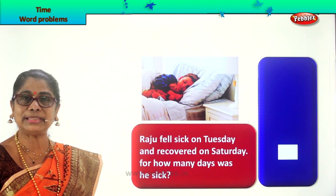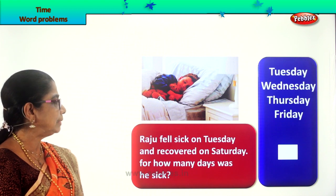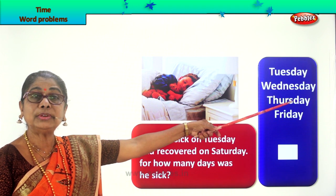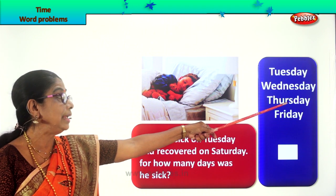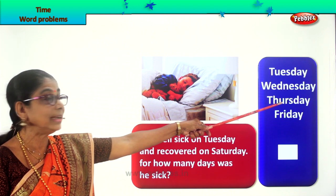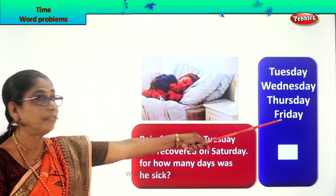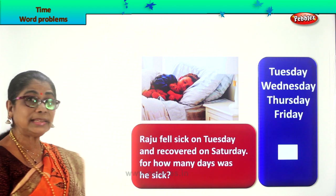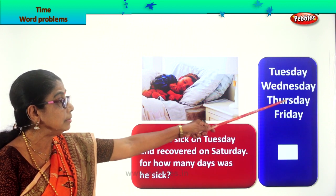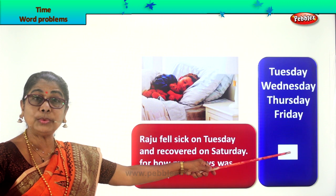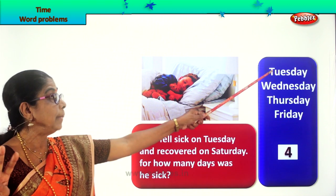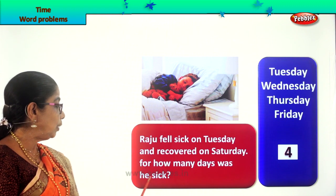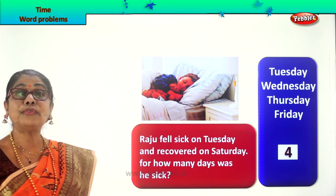For how many days was he sick? Raju fell sick on Tuesday. He was sick on Wednesday. He was sick on Thursday. He got better on Friday. For how many days was he sick? He was sick for one, two, three, four days. He was in bed for four days — Tuesday to Friday. So he was sick for four days.